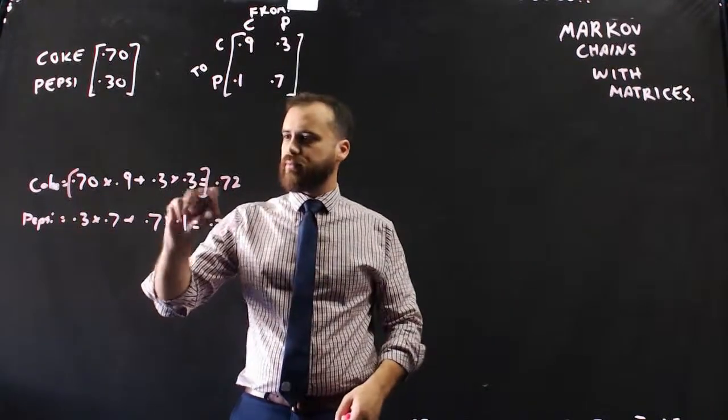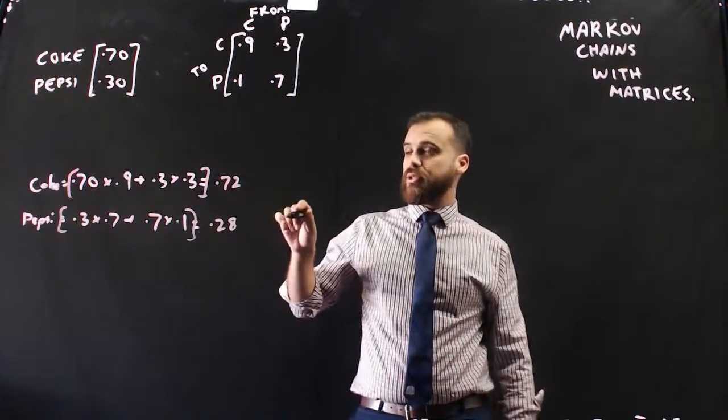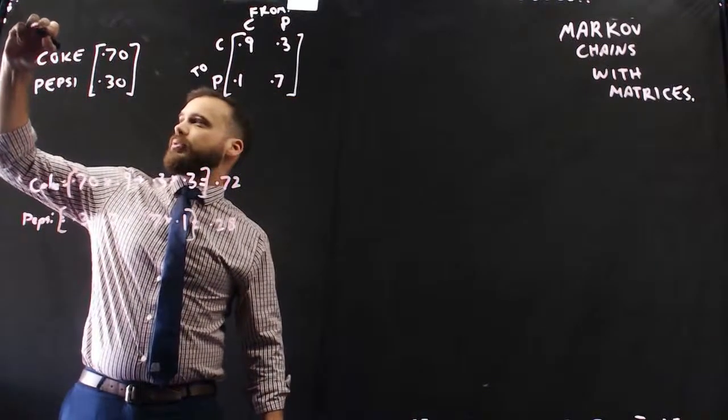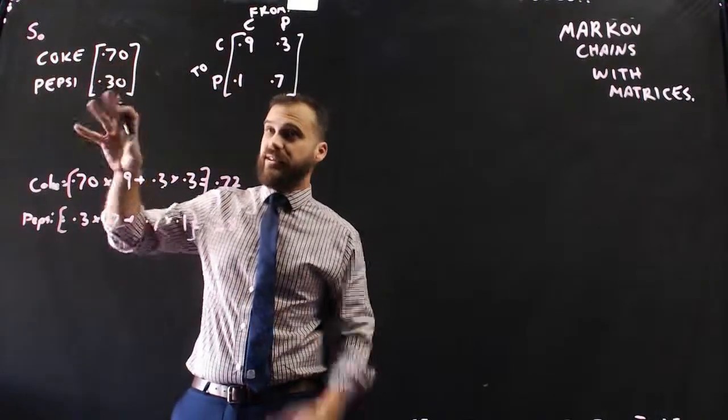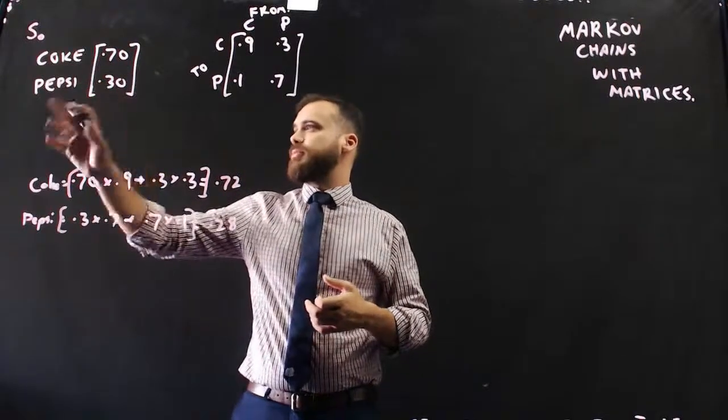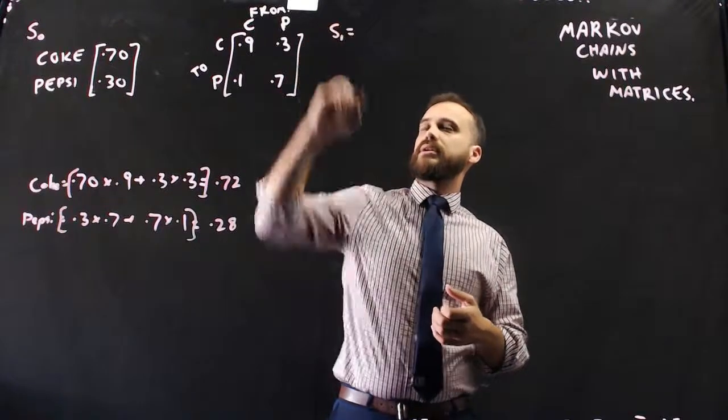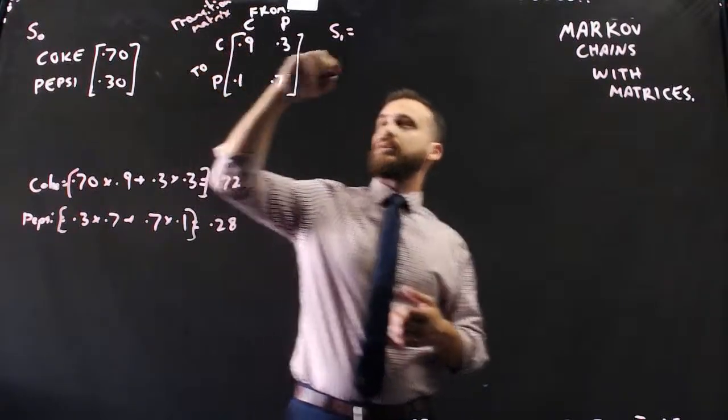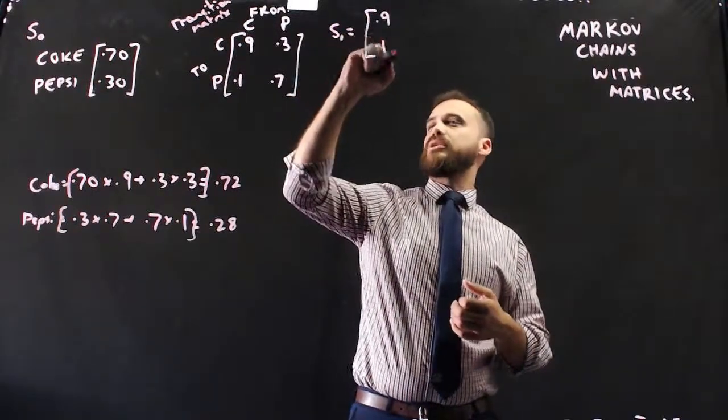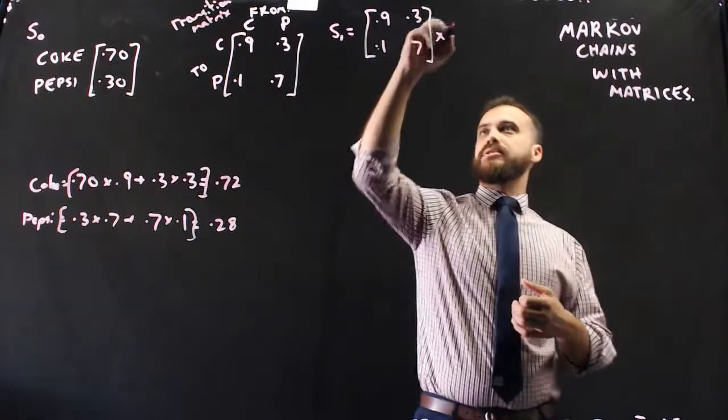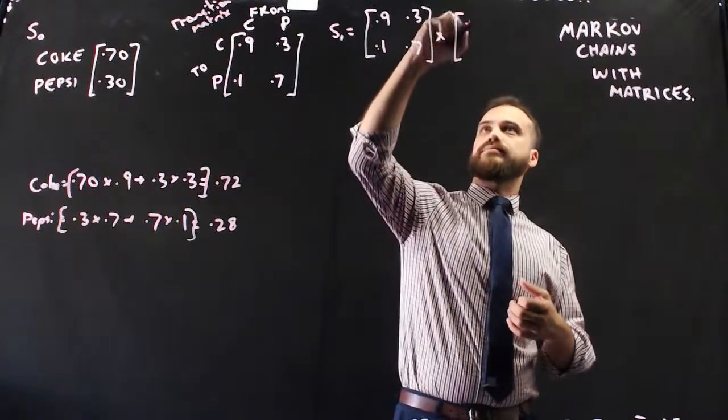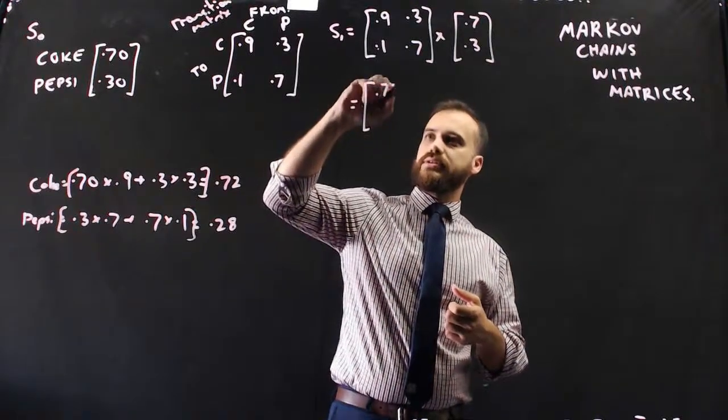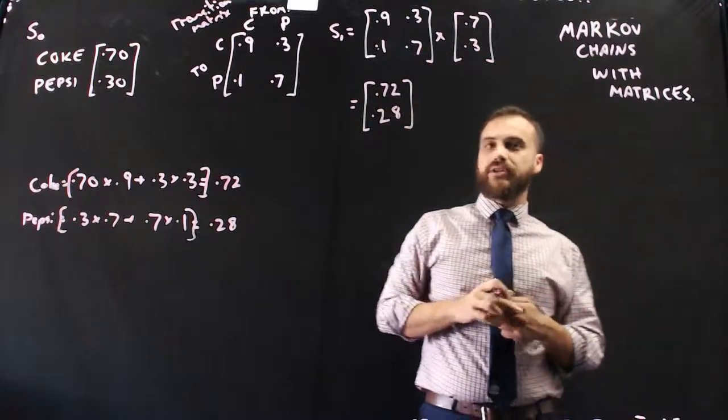If you look at this calculation here, what this actually was, was matrix multiplication. So let's do it slightly more formally now. These are called states. I'm going to call this state 0. This is our first state, the first condition. So Coke 0.7, Pepsi 0.3. Let's calculate state 1. State 1 is going to be equal to what's called the transition matrix. So the transition matrix, 0.9 times 0.1, 0.3 times 0.7, times state 0. And that will give us our Coke, Pepsi of 0.72, 0.28. You can put that matrix into your calculator if you want.